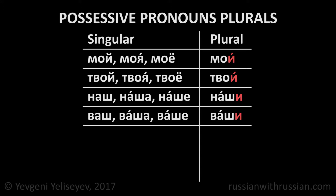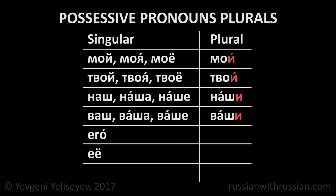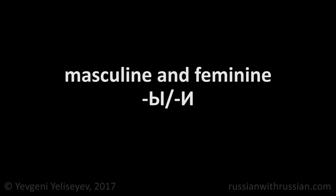Such pronouns as его, её, and их don't change their form. Normally, the plural form of masculine and feminine nouns ends in ы or и.